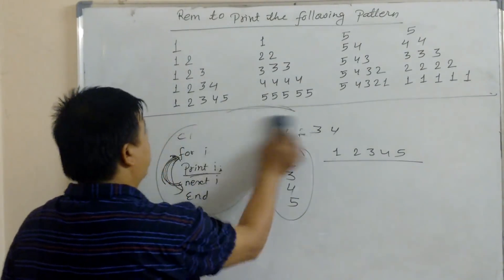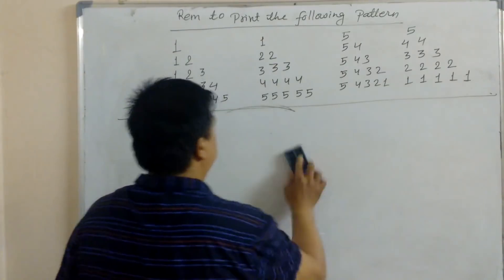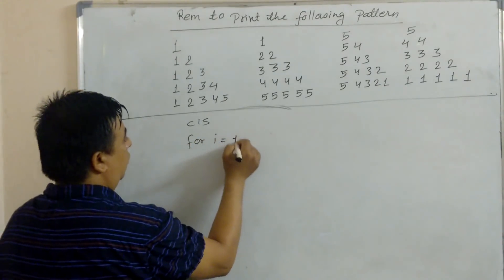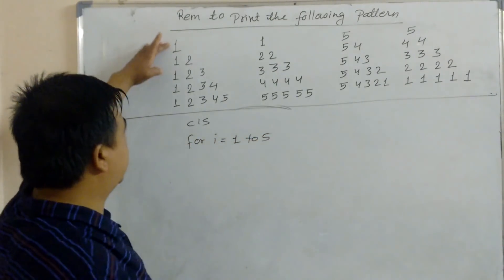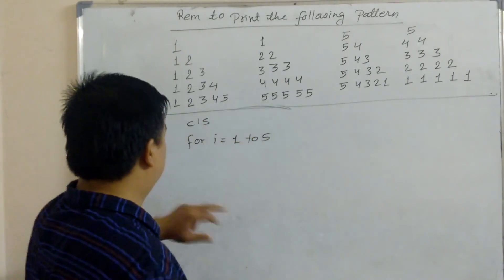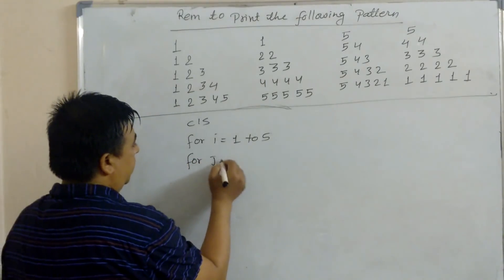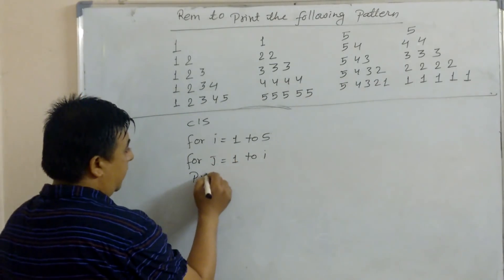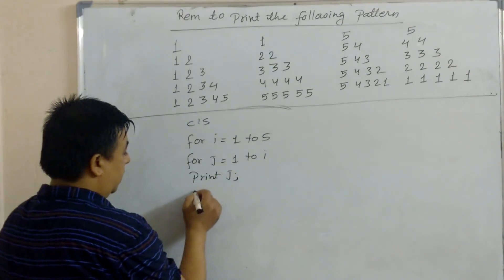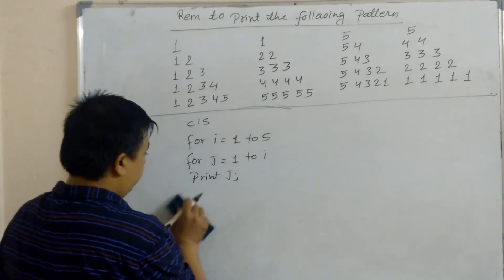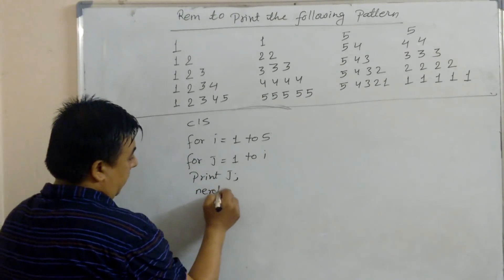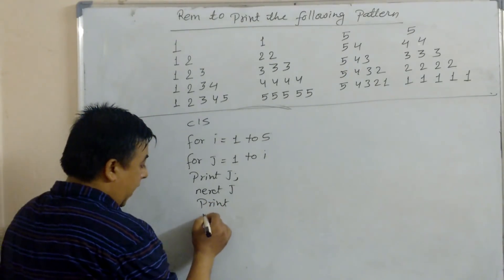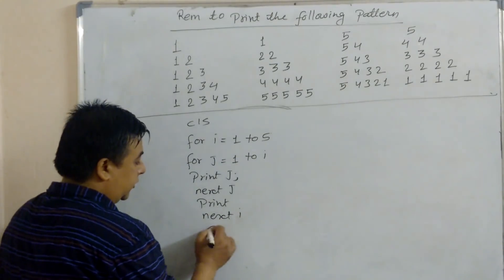Now we'll print this pattern format. CLS — clear screen. FOR I = 1 TO 5, because we start from 1 and end at 5. This is the outer loop. Then we use the inner loop: FOR J = 1 TO I. Then PRINT J with a semicolon. Then NEXT J. After that, we move to the next line using PRINT. Then NEXT I, and END.